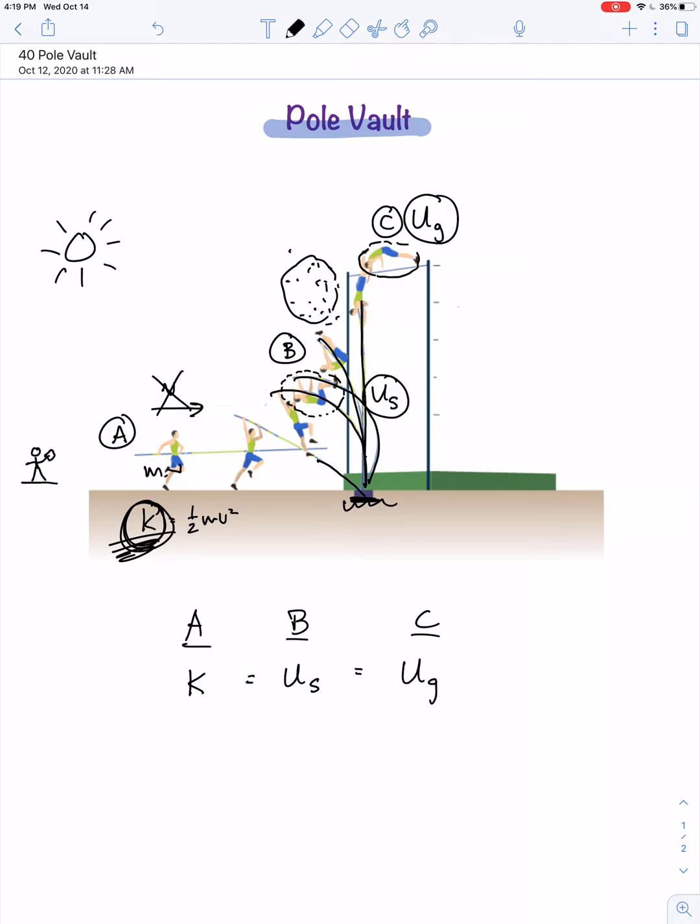Now, beyond point C, what happens to the energy? It certainly doesn't stay gravitational potential energy. The pole vaulter doesn't reach this position and just hover there. They're going to fall back toward the mat. And so, the gravitational potential energy is going to decrease as their kinetic energy increases again.